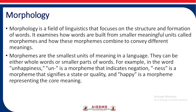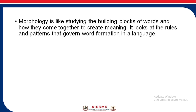For example, the word 'unhappiness': 'un' is a morpheme that indicates negation, 'ness' is a morpheme that states quality, and 'happy' is a morpheme representing the core meaning. Morphology is like studying the building blocks of words and how they come together to create meaning. It looks at the rules and patterns that govern word formation in a language.